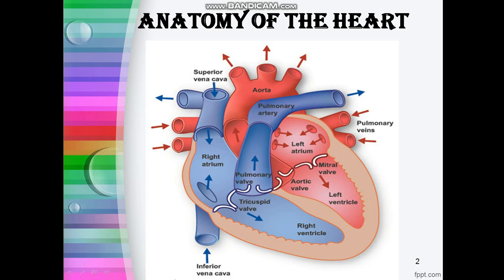Moving on to the figure, the figure shows the cross section of the interior of the heart. Our heart is divided into four chambers. The top two chambers are called atria and the lower chambers are called ventricles. The four chambers are: right atrium, left atrium, right ventricle, and left ventricle.